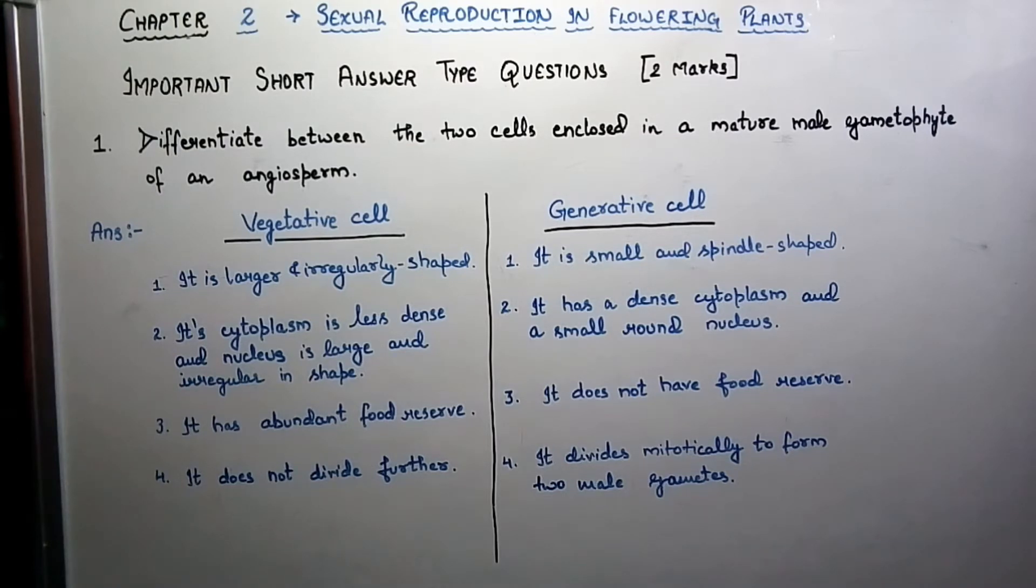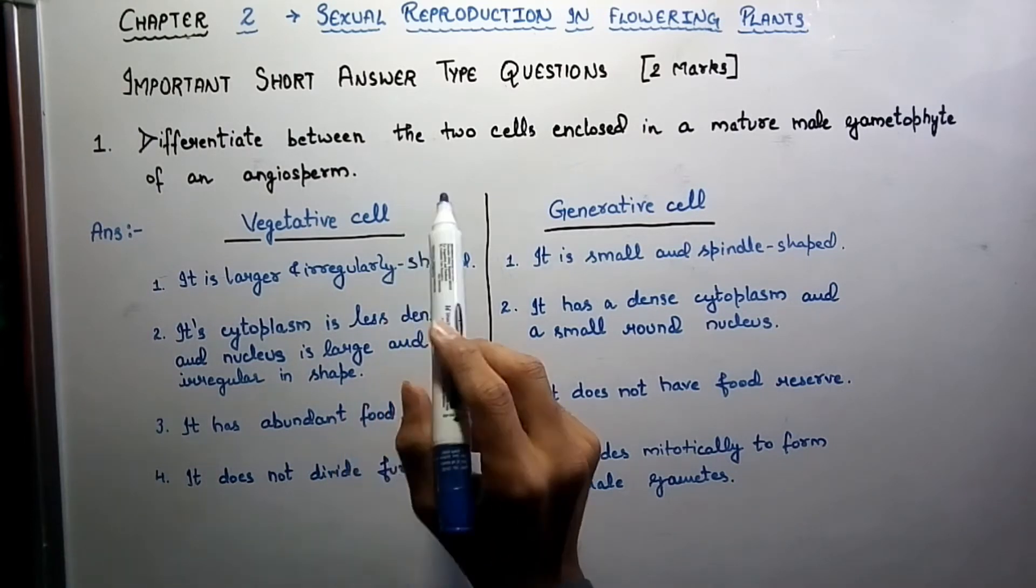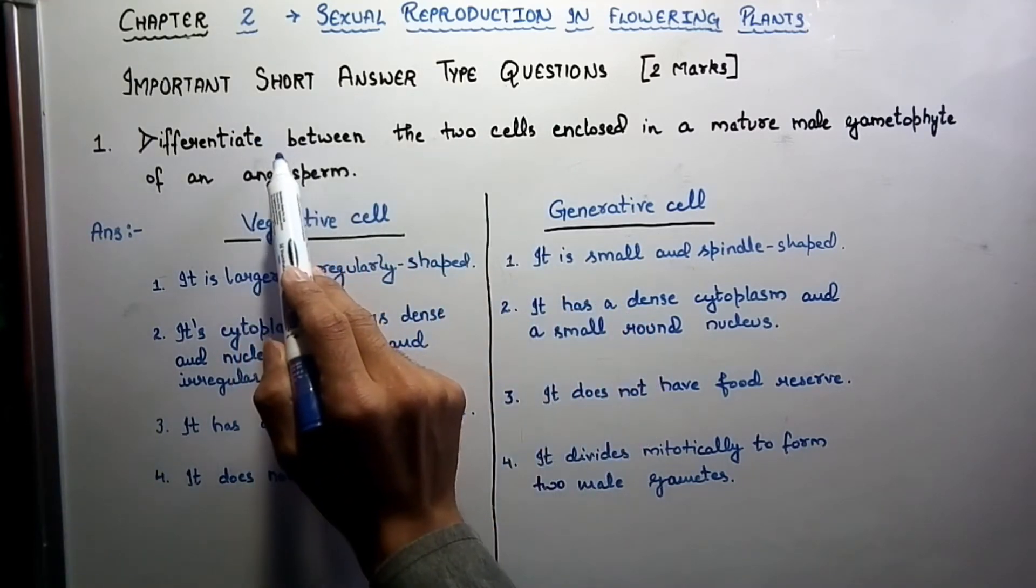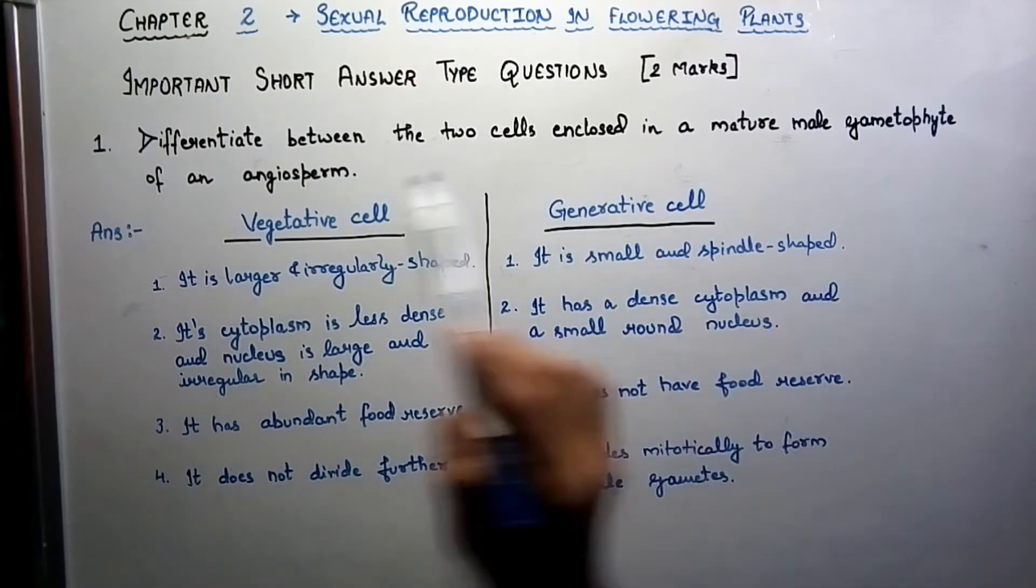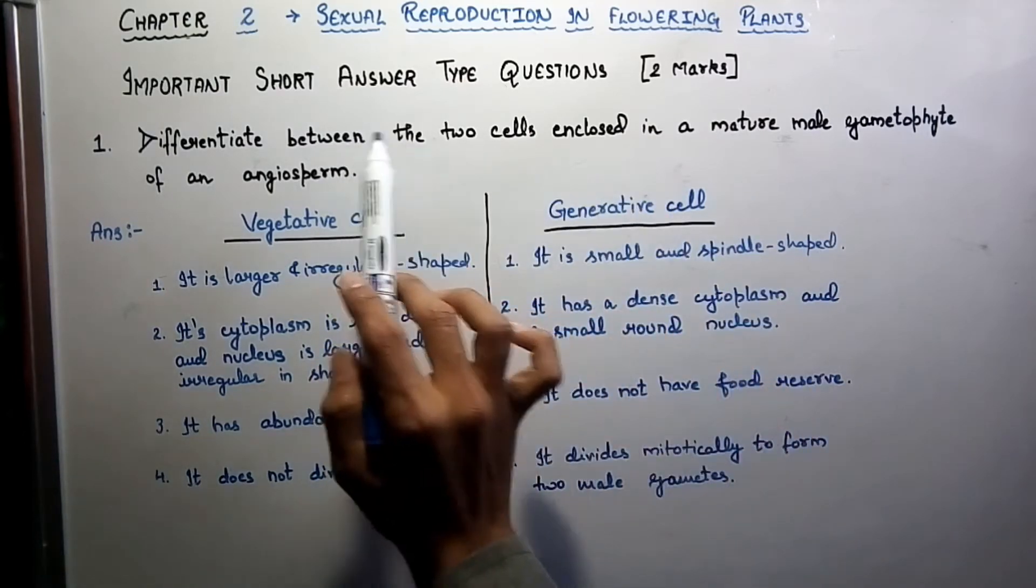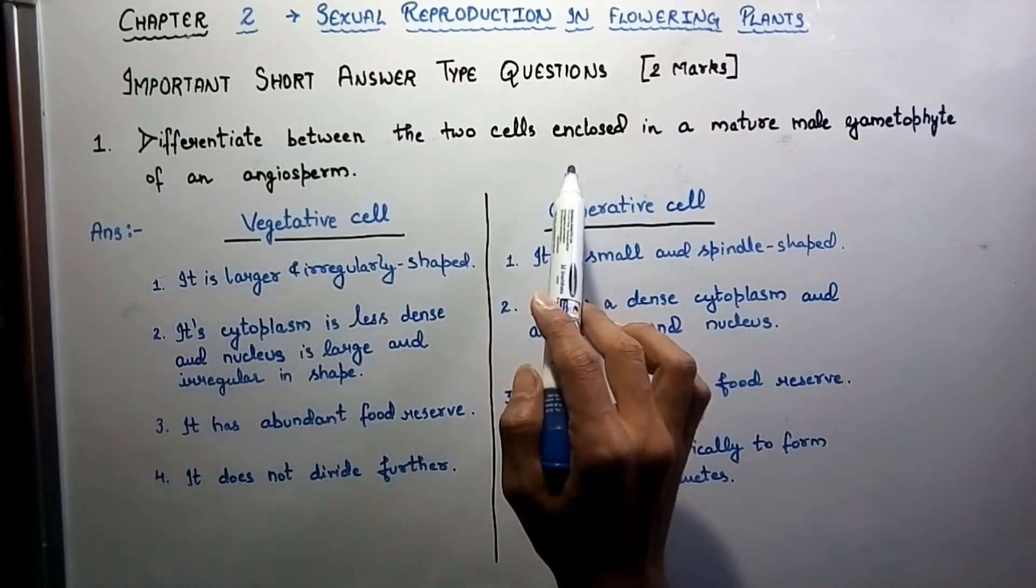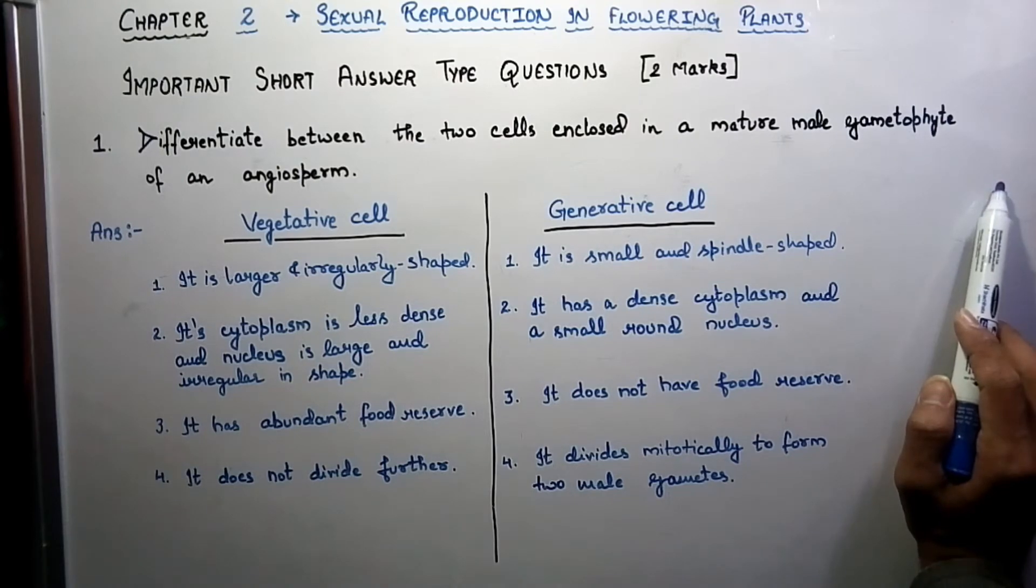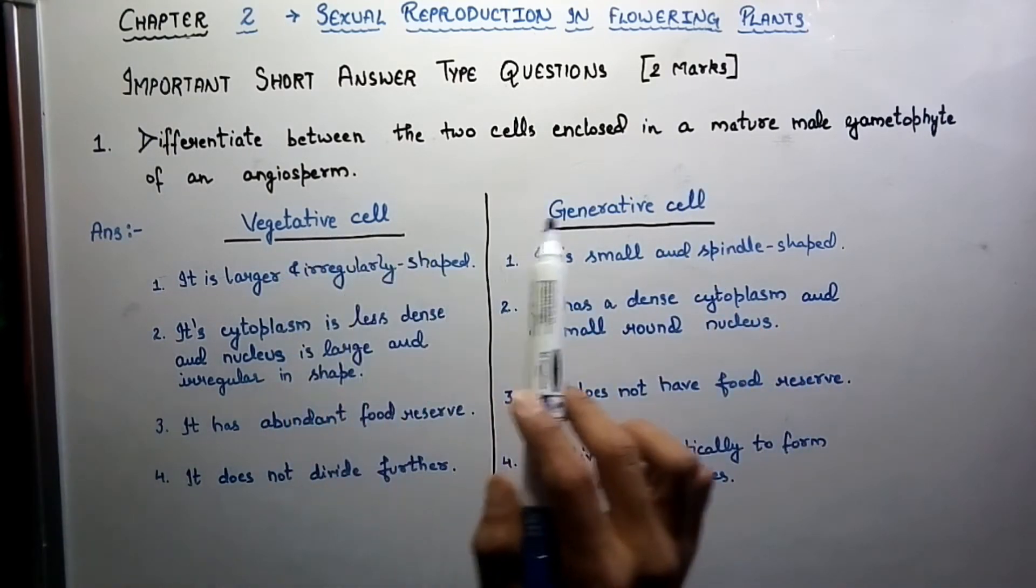All these questions are based on differentiation. Our first question is: differentiate between the two cells enclosed in a mature male gametophyte of an angiosperm. The question is asking us to identify and differentiate between two cells in a mature male gametophyte. These are none other than the vegetative cell and generative cell.